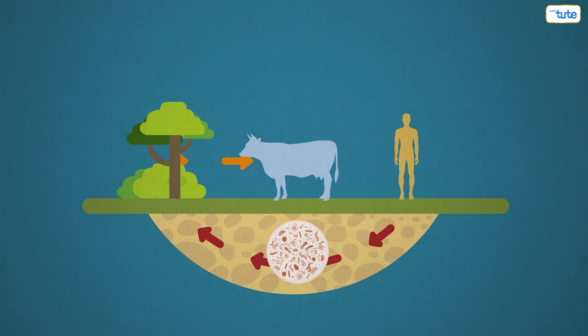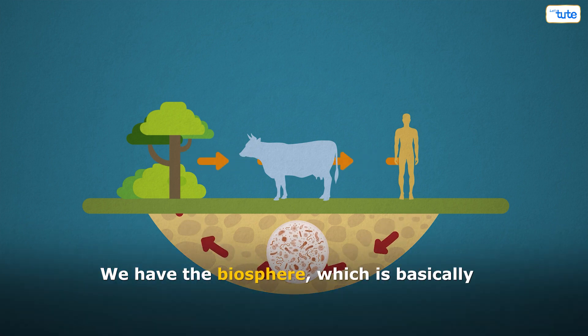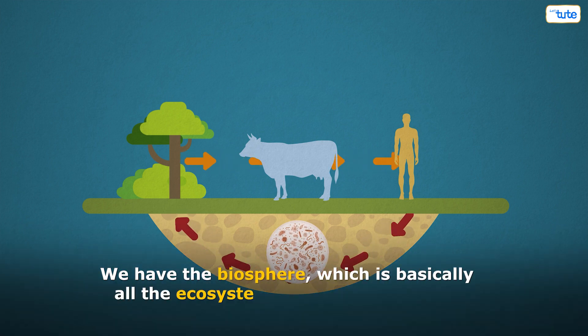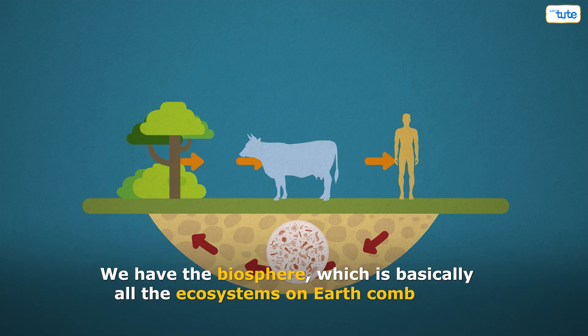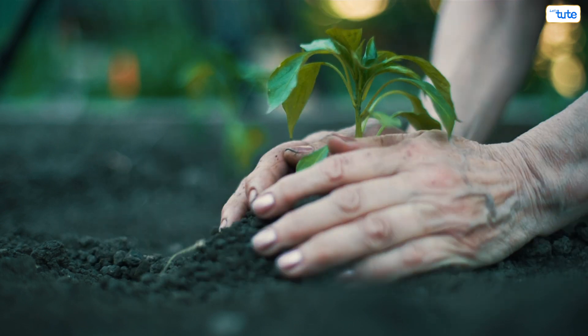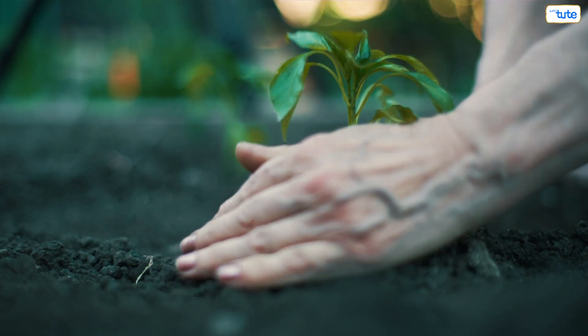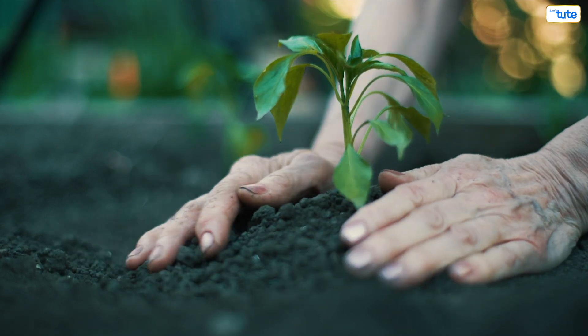And finally, we have the biosphere, which is basically all the ecosystems on earth combined. It's the largest scale of ecology and includes every living organism on our planet.